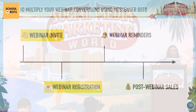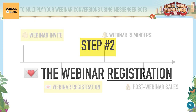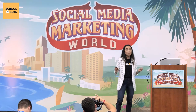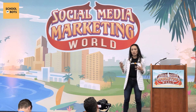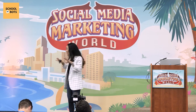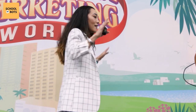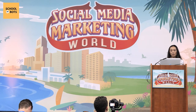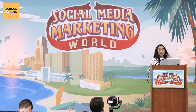Moving into step two: webinar registration. Set expectations right at the beginning. The worst thing you can do in a chatbot is keep asking questions so people wonder when it will end and when they'll finally get to register. You want to tell them how many steps it takes — something as easy as 'step one of two' or 'step two of three' so they always know where they are.